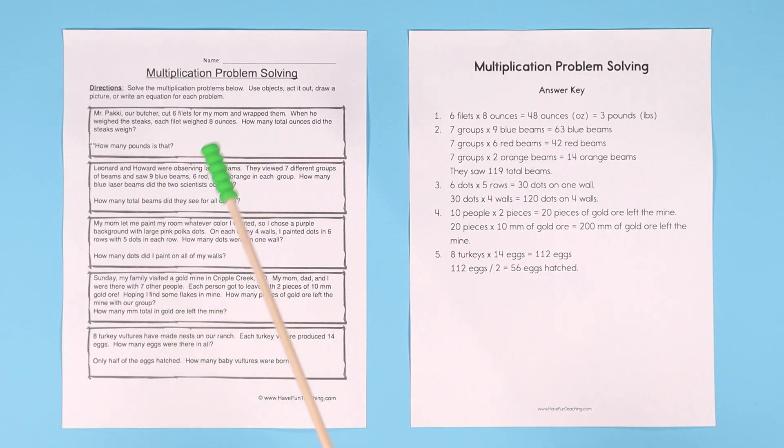Each one actually has two questions. Some of them are conversion questions. For example, in the first one, Mr. Packy, our butcher, cut six fillets for my mom and wrapped them. When he weighed the steaks, each fillet weighed eight ounces. How many total ounces did the steaks weigh? So that would be six fillets times eight ounces each. That's 48 ounces.